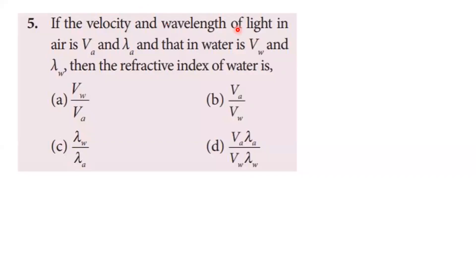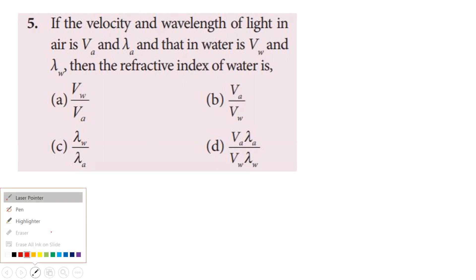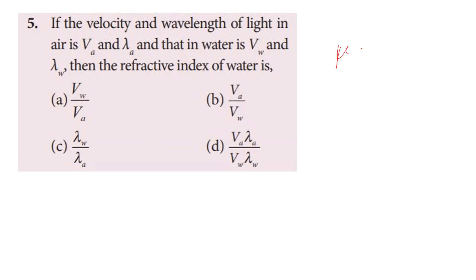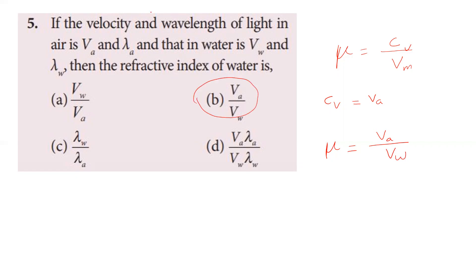If the velocity and wavelength of light in air is vₐ and λₐ, and in water is v_w and λ_w, the refractive index of water equals speed of light in vacuum divided by speed of light in medium. Since speed in vacuum is approximately equal to speed in air, the refractive index of water equals vₐ divided by v_w. Second option is correct.